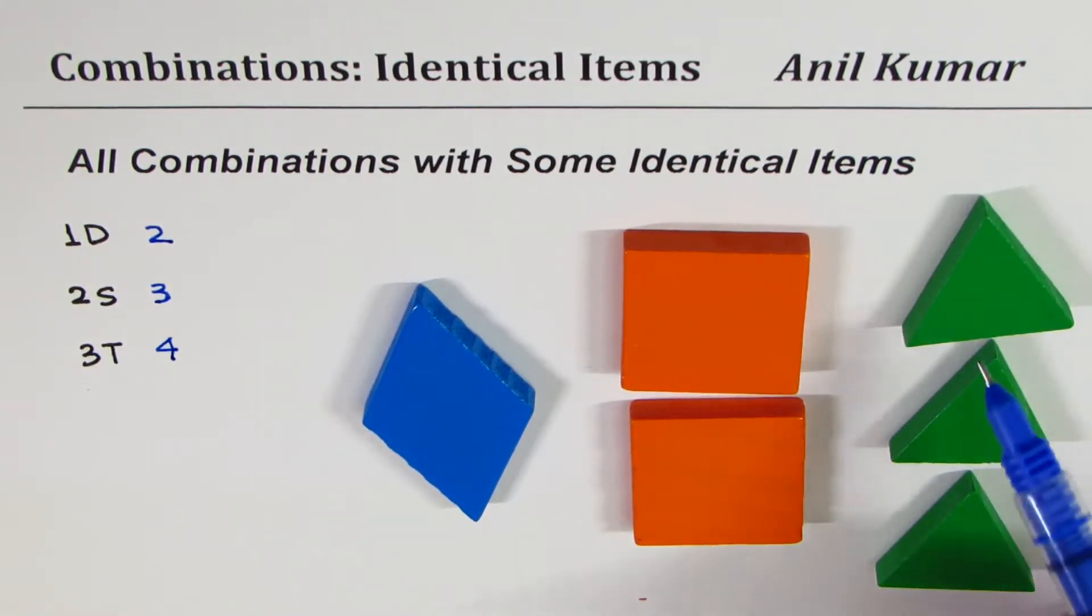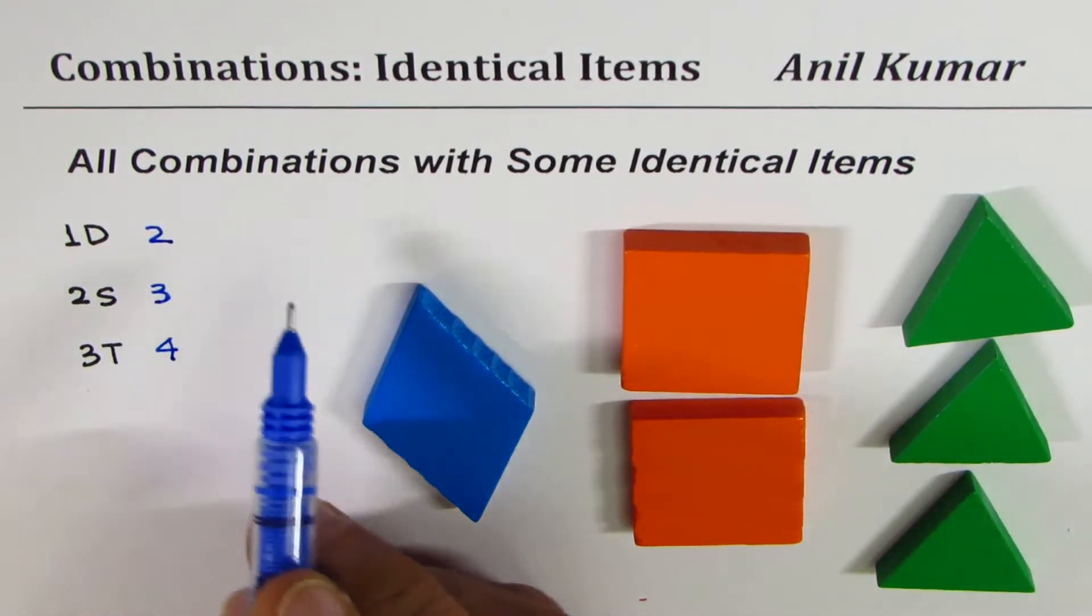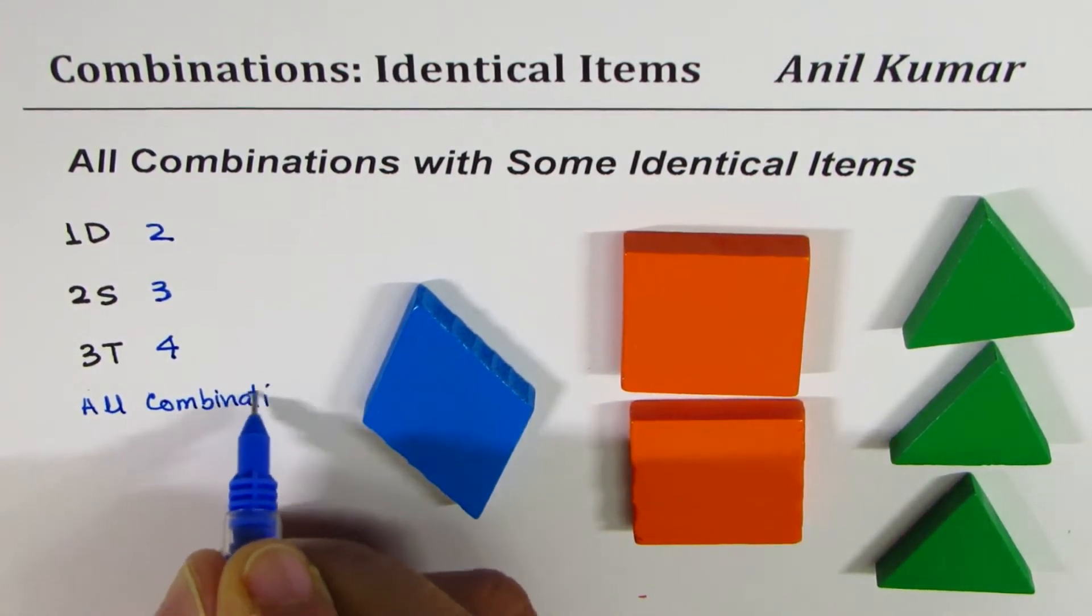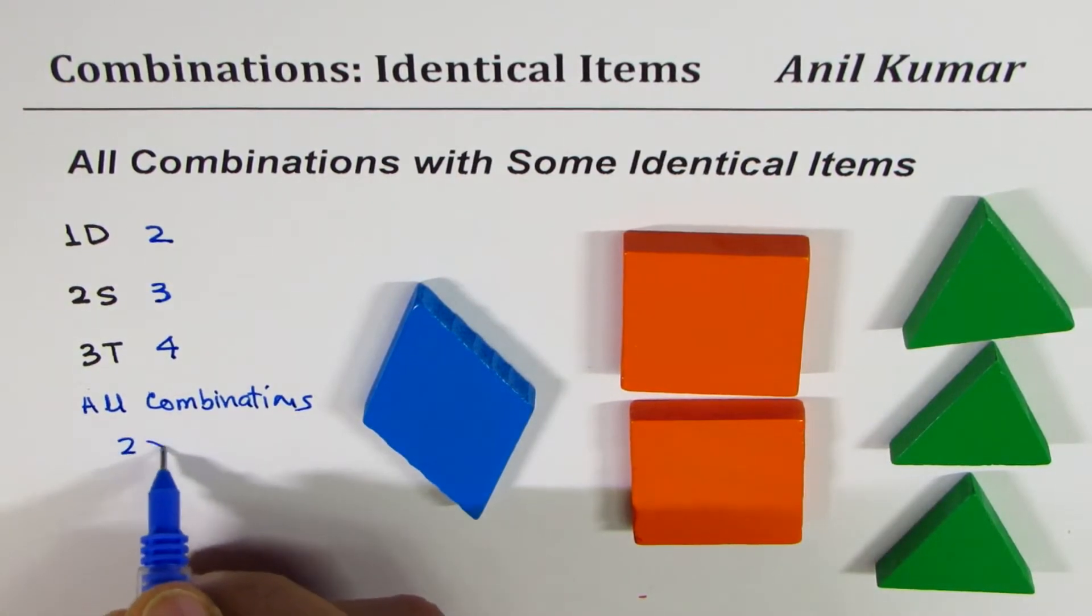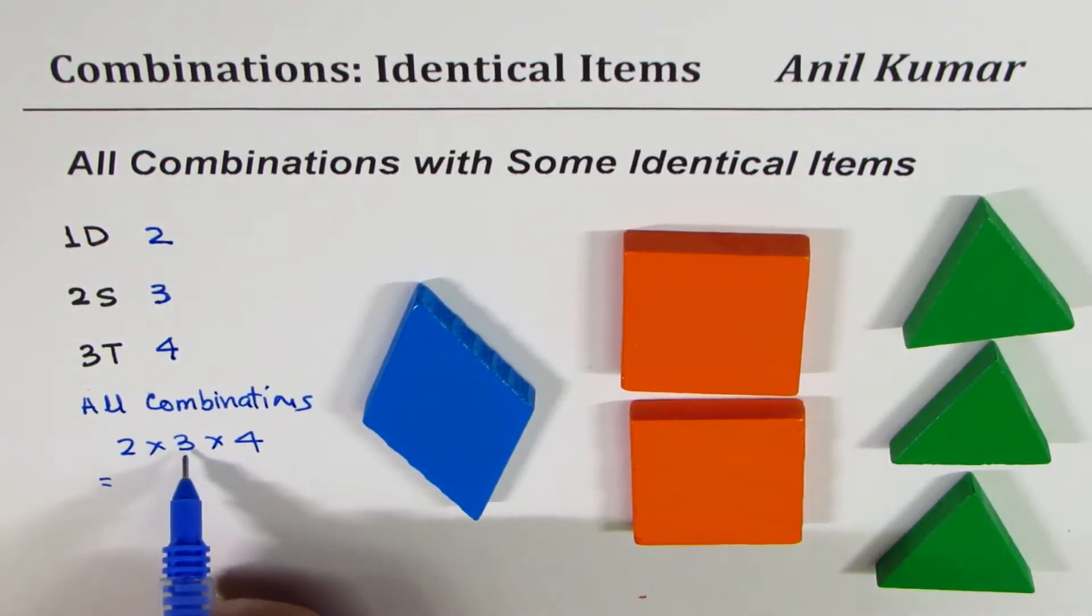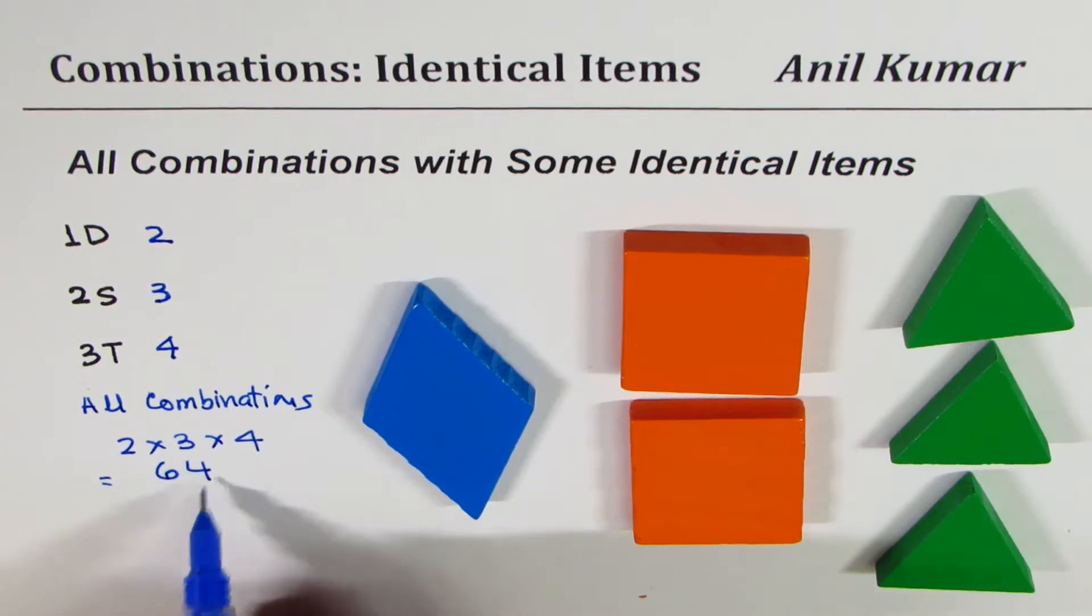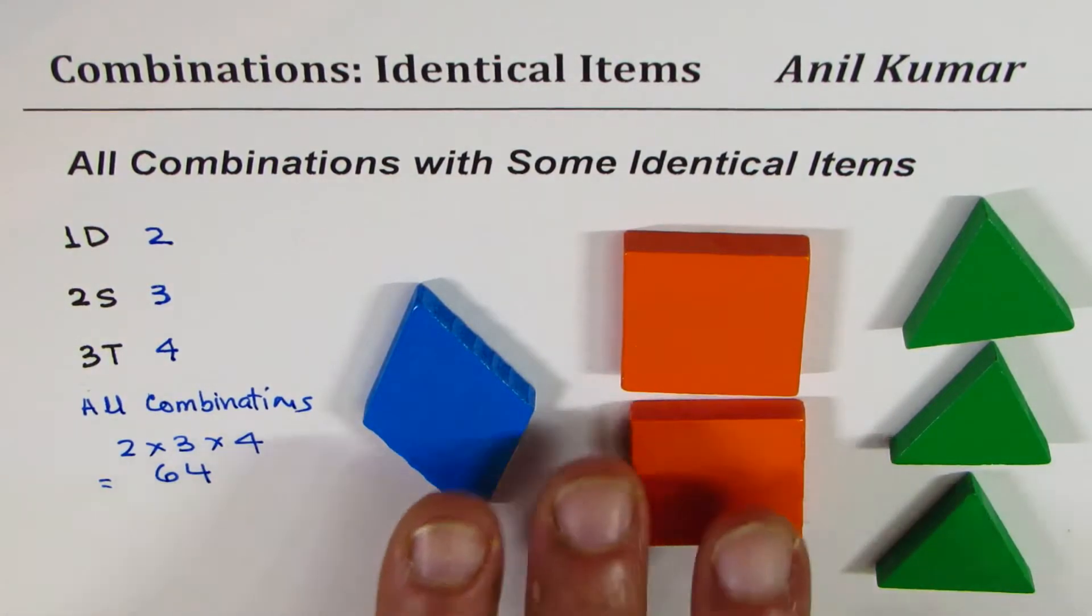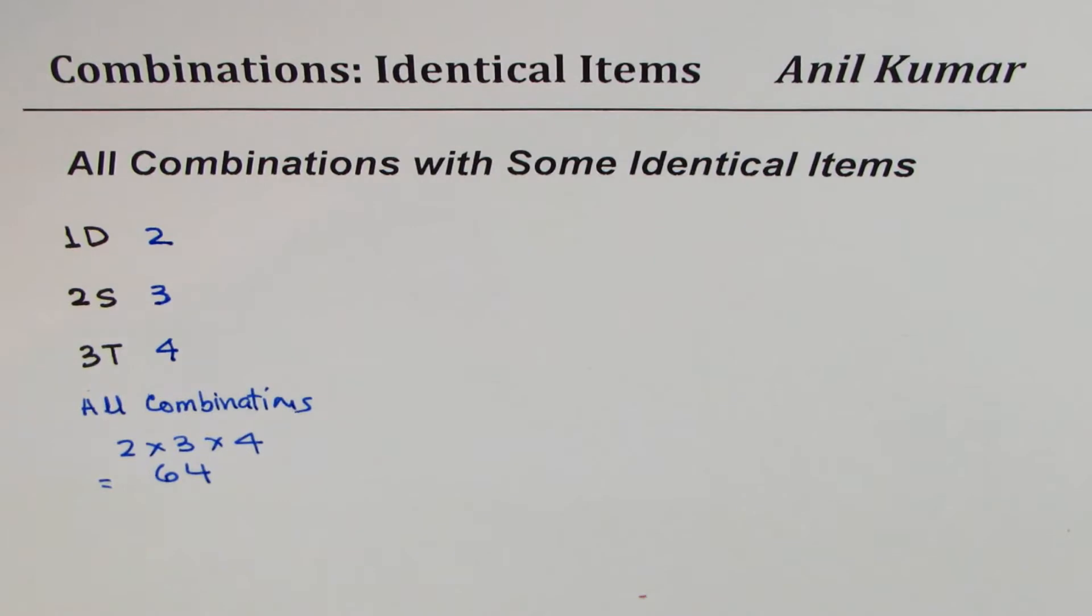Now these are all distinct elements. So if I have to find out total number of choices, all combinations, what do I get? The answer should be two times three times four. That gives you two times three is six, times four is twenty four. So we have actually derived a very important relation with this particular example.